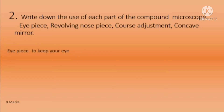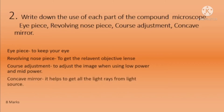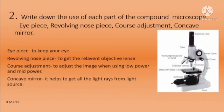Eye piece: to keep your eye. Revolving nose piece: to get the relevant objective lens. Coarse adjustment: to adjust the image when using low power and mid power. Concave mirror: it helps to get all the light rays from the light source. Here you have been given the diagram of the compound microscope — eye piece here, revolving nose piece here, coarse adjustment here, and concave mirror here, as you can see.